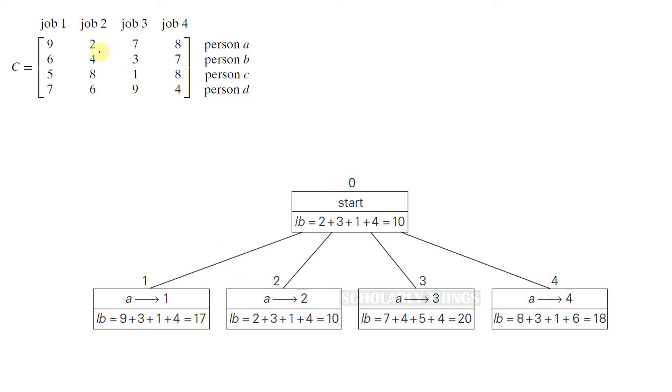If you assign job 2 to person A, the lower bound will be 2 plus 3 plus 1 plus 4, which is 10. If you assign job 3 to person A, the lower bound will be 20. If you assign job 4 to person A, the lower bound will be 18.